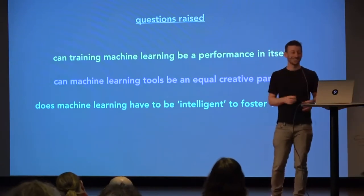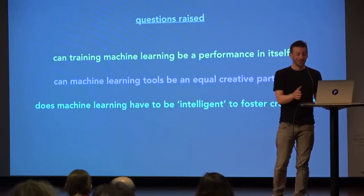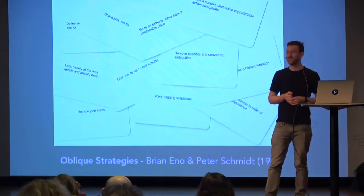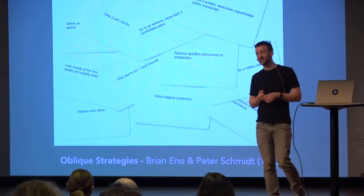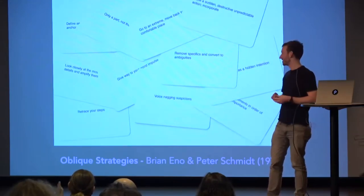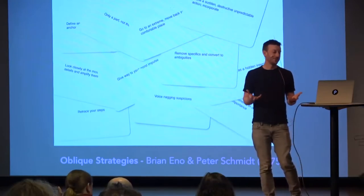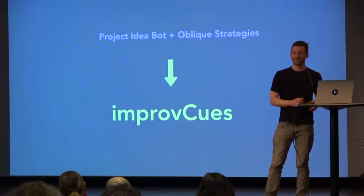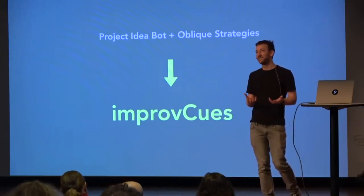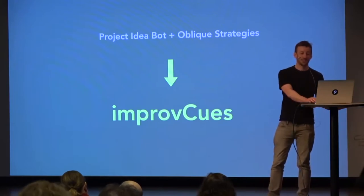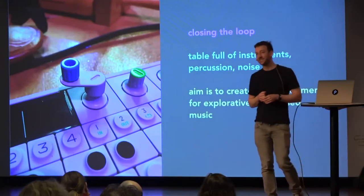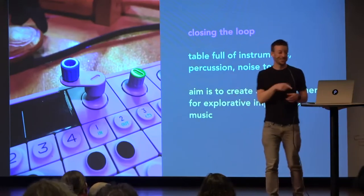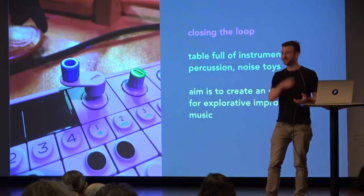Moving on quickly to how we actually got to the installation: ImprovCubes at the back is essentially us reframing it for the context of music, drawing upon the idea of oblique strategies — Brian Eno and Peter Schmidt's 1975 card deck for creative unblocking. So if you get stuck while in the studio or making music, you could use these to unblock yourself. We thought: could you just have Project Idea Bot and oblique strategies and create a musical performance based on machine-generated cues? In doing so, we wanted to close the loop — where before, the bot generated ideas you clearly couldn't act on right then and there, whereas here you can come up with an idea, perform it, suggest a new cue, and close this loop to get creative feedback.